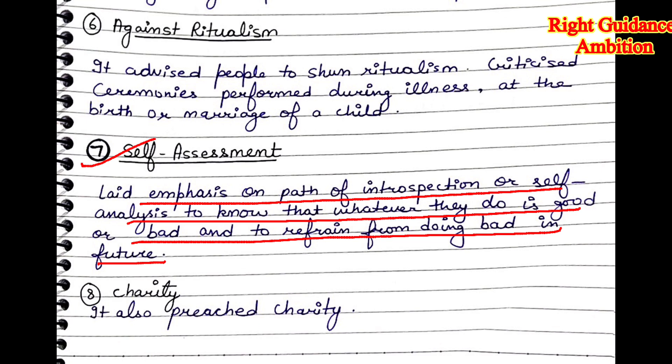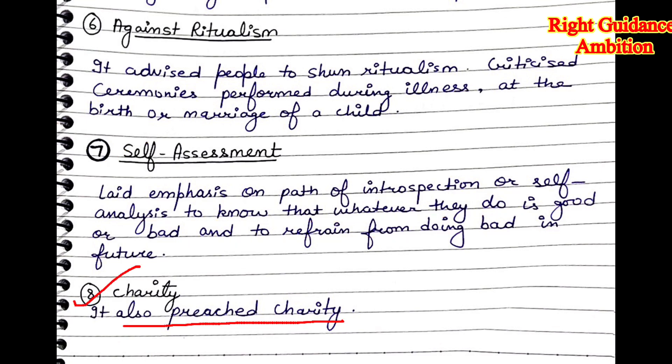Through self-assessment, people can plan better so that in the future they do not repeat the wrongs of the past. By self-assessment, a human will be better for himself and for society. The eighth point is that it also preached charity — that we should help people.